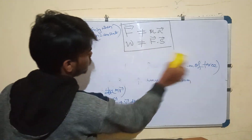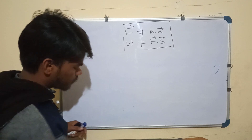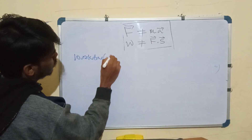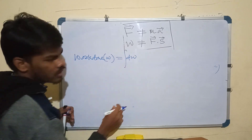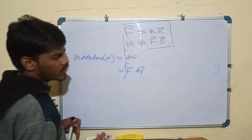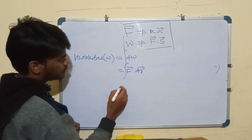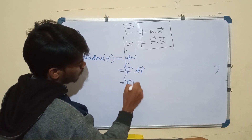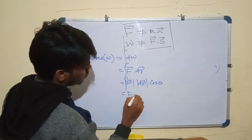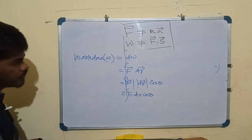Next, the definition of work done. Work W is always equal to the integration of dW, which is equal to the integration of F dot dr. This is the very basic definition of work done. You always have to use the integral of F dot dr, which equals the integral of |F||dr|cosθ.